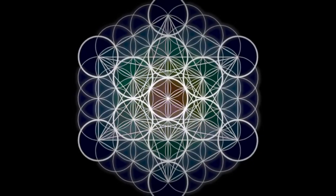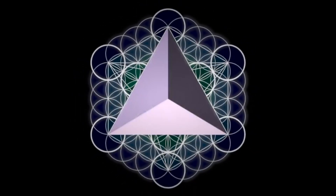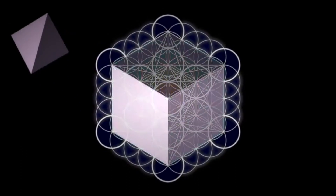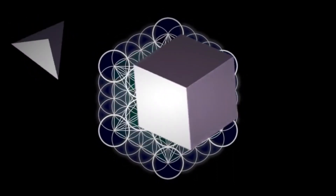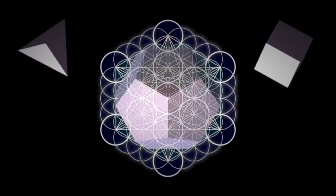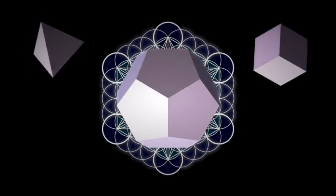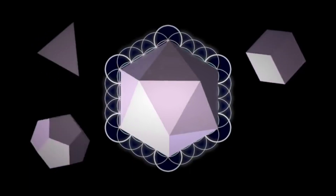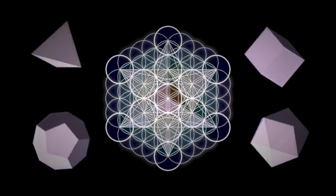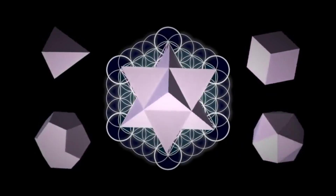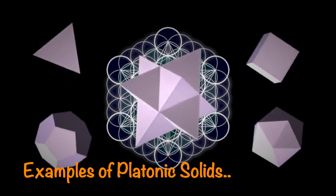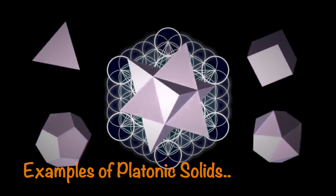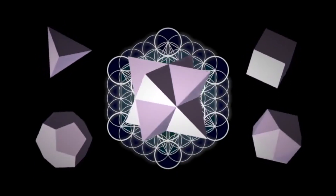In ancient times, the Platonic Solids found inside the Flower of Life were believed to be the building blocks of the universe. The Flower of Life pattern contains the Platonic Solids within it and is believed to be a blueprint for the creation of everything in the universe. Ancient cultures, particularly the Egyptians, believed that the Platonic Solids had mystical properties and were connected to the creation of the universe.